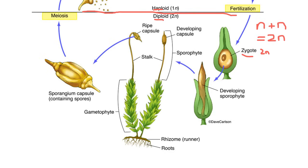This is all happening inside of the female gametophyte, and as the zygote grows it's going to develop into our sporophyte. If we zoom out a little bit, we can see that at the top of the female gametophyte we will start to see a sporophyte growing out of the top. What we have is this long stalk with a capsule at the end. Now this capsule is really important because that is where we are going to make the spores to start this whole process all over again.